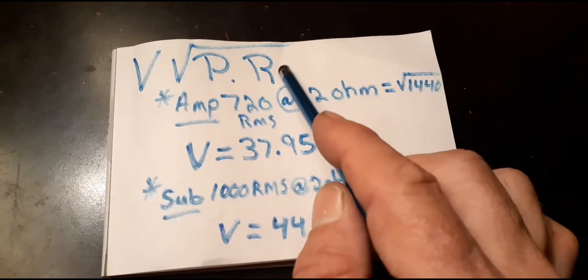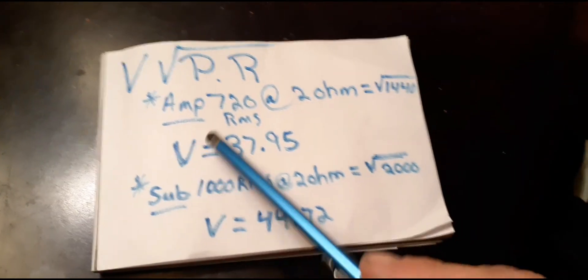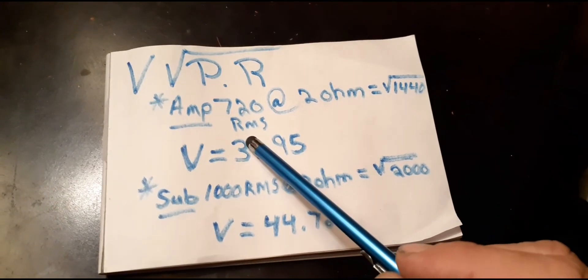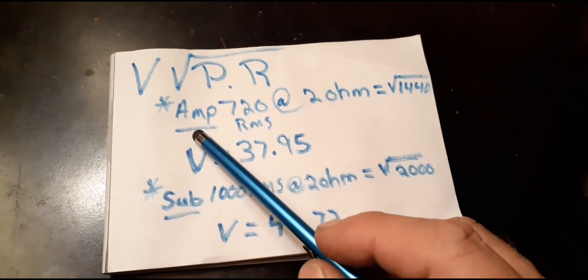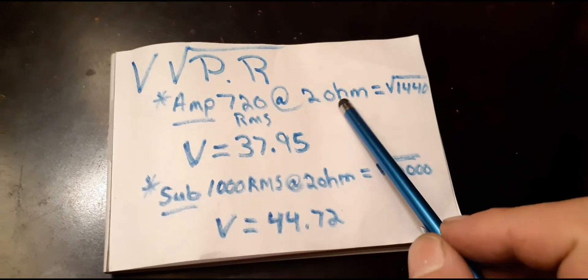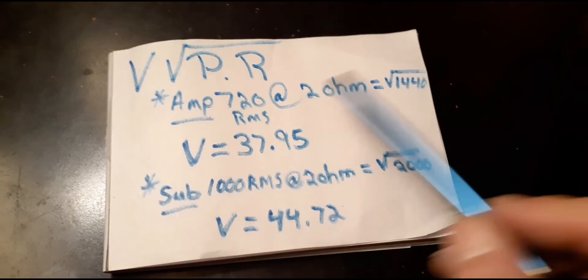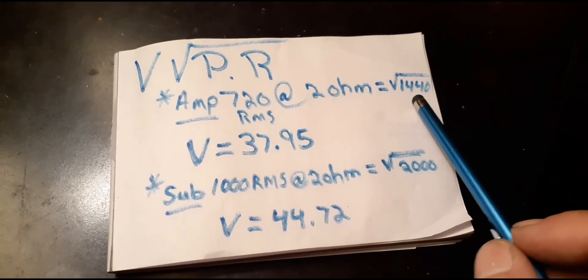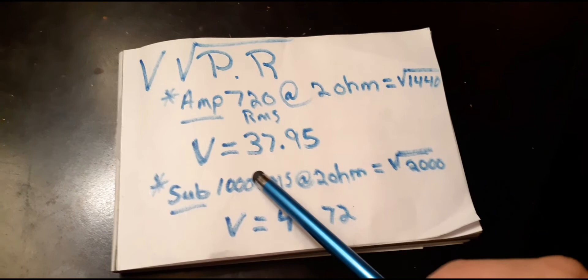You can either use your amp RMS or your sub, but for the amp at two ohms is 720 RMS. The square root is 1440, you do the square root of that, the number comes out to be your voltage 37.94.